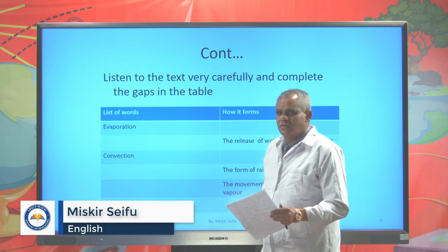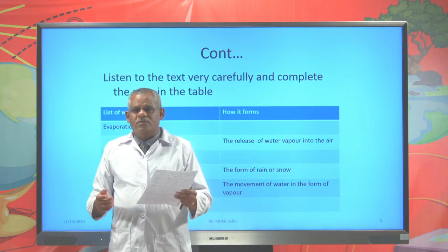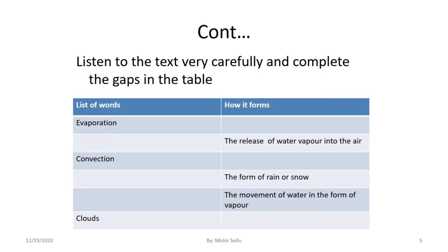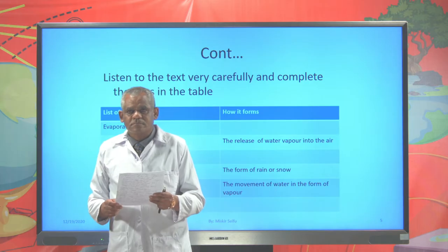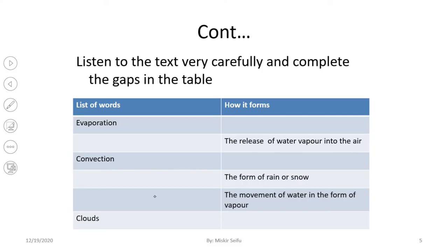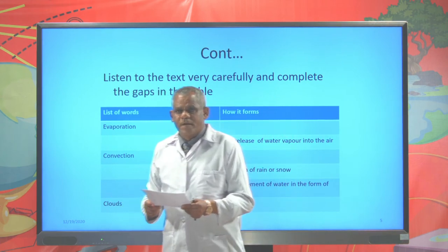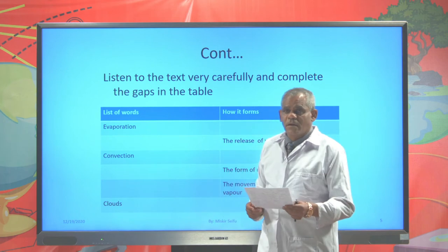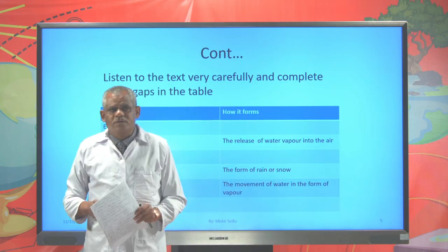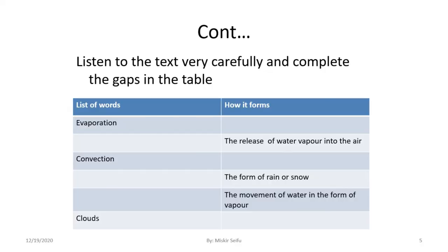Precipitation — the form of rain or snow. That is quite correct. Very nice. And then the movement of water in the form of vapor — that's advocation. And finally, clouds. How does or when do clouds form? Clouds are water droplets in the air. When the droplets rise in the air, clouds may form. Very interesting. I appreciate you. You have done your activities beautifully about this listening task.